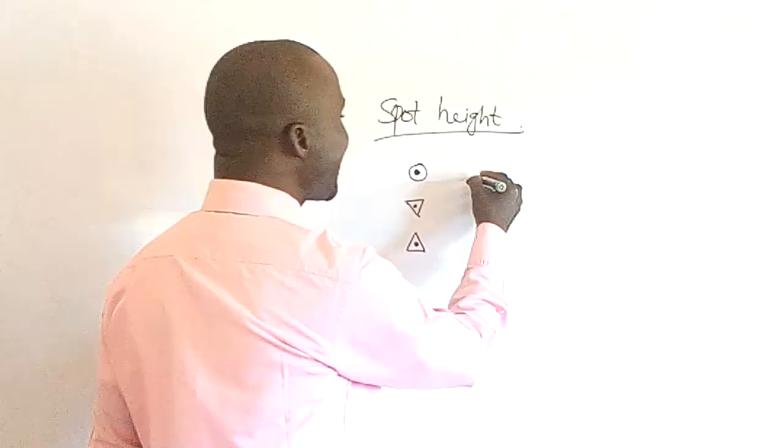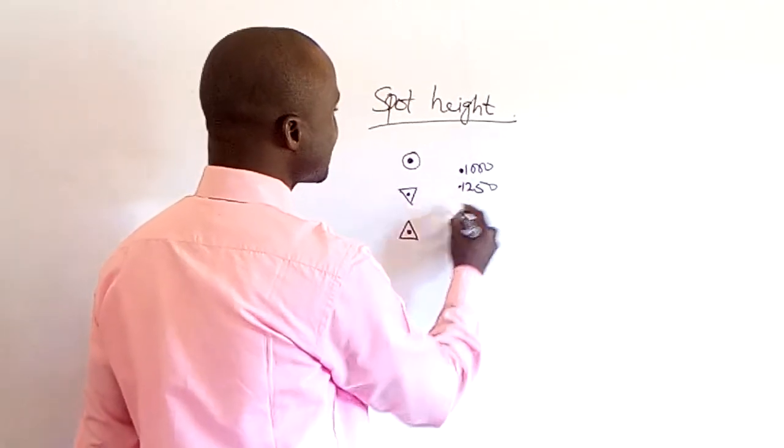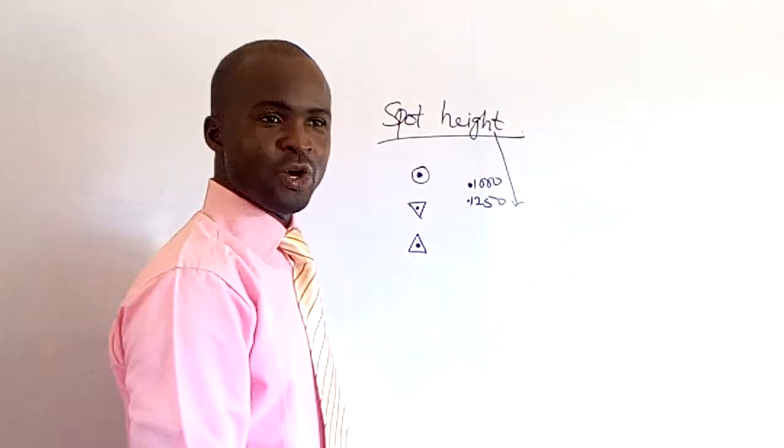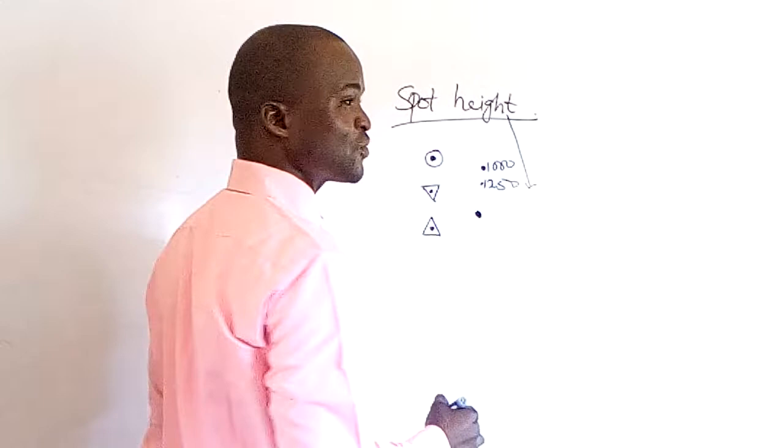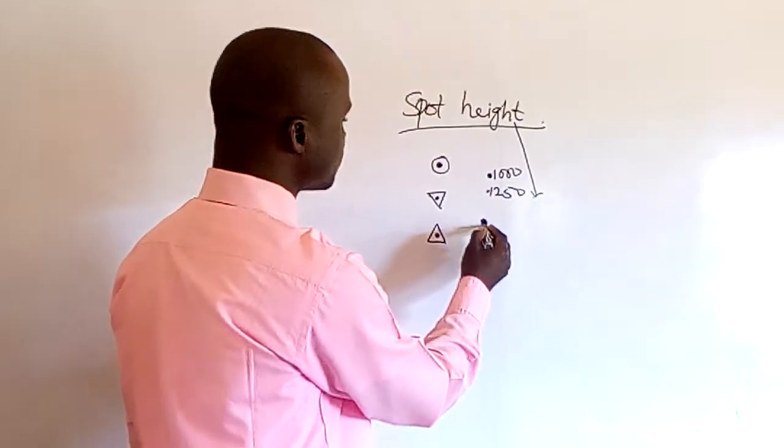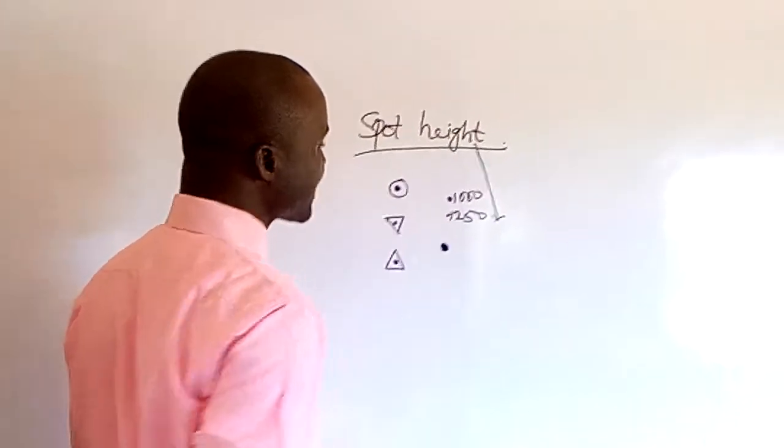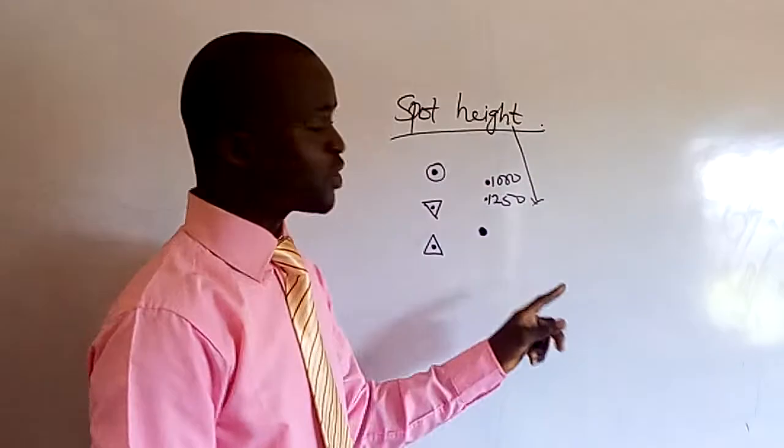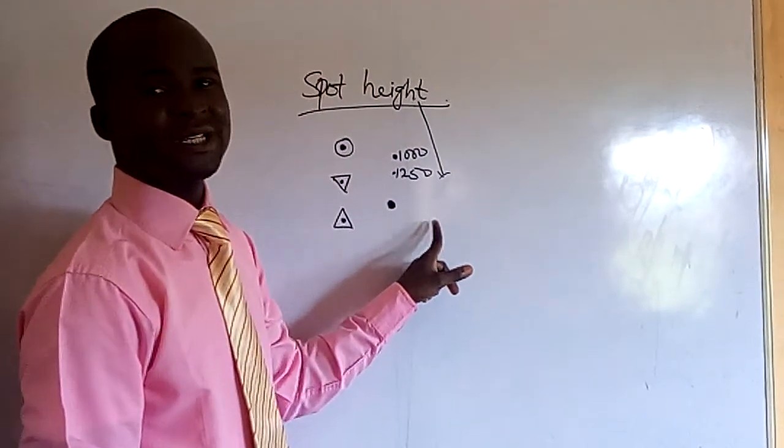This dot with any figure, either 1,000, or 1, 2, 5, 0 - this is what we call spot height. Not only that, if you have this dot again in geography, when you have a map of Nigeria and locate some towns, this is what you use to denote a town on the map of Nigeria. If anybody that is marking your script asks you to locate a town and you put that dot on the map of Nigeria, they will know that it means town.